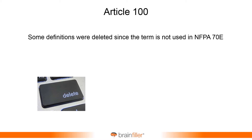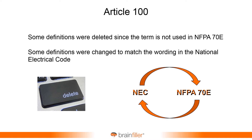With the 2021 edition, there were some revisions and modifications to definitions. Some definitions were actually deleted from NFPA 70E — terms that simply weren't being used were removed. Some definitions were changed to match wording in the National Electrical Code for consistency, so you'll see some word changes that align with, for example, the NEC. There are also other changes to clarify definitions a little better.